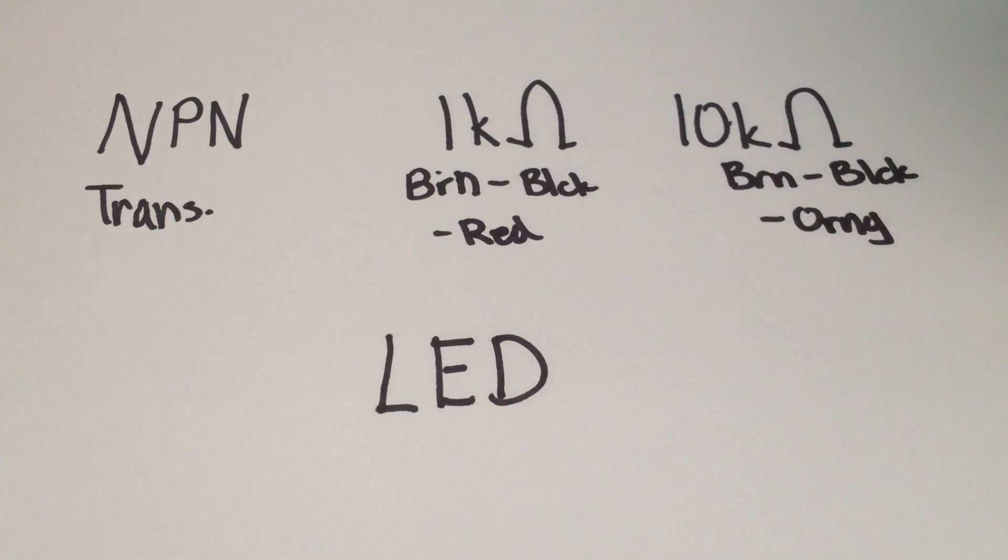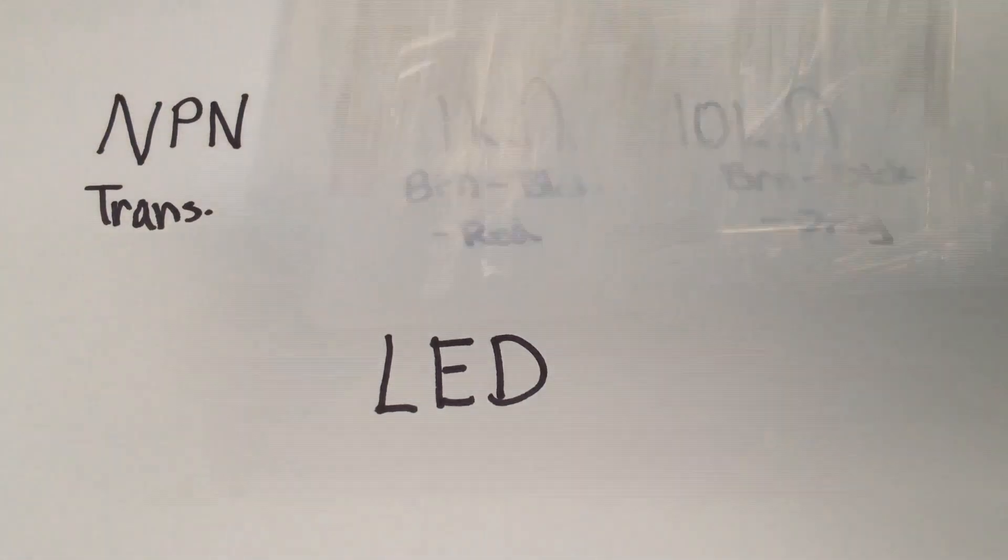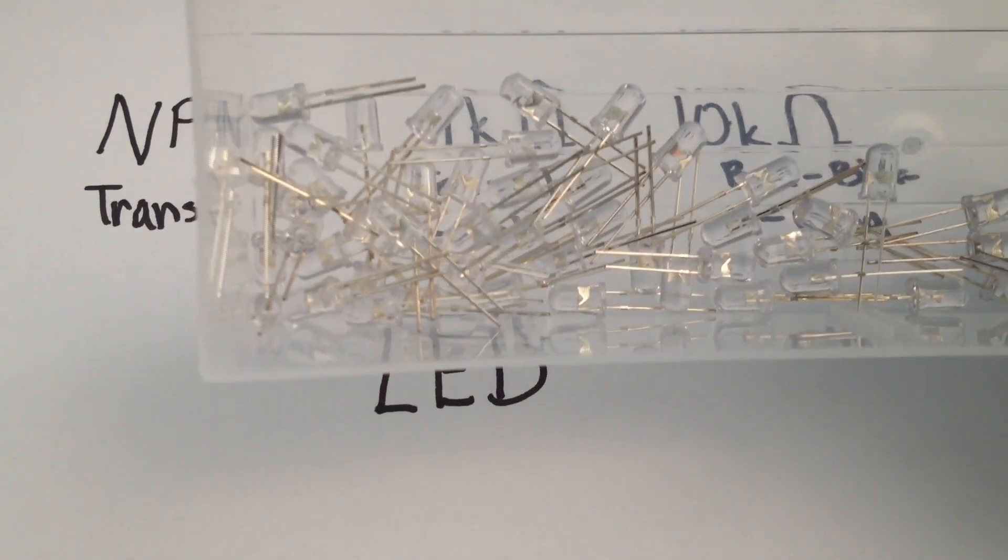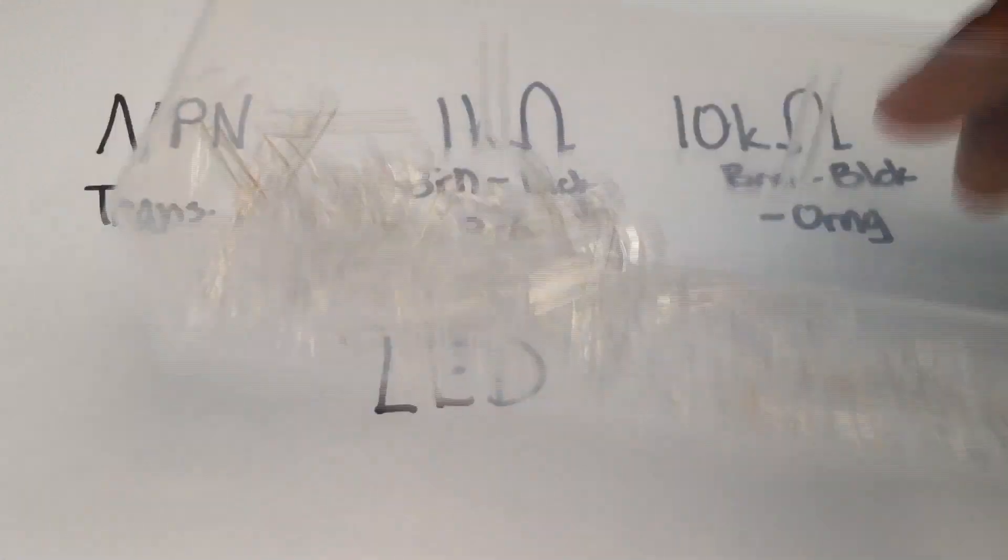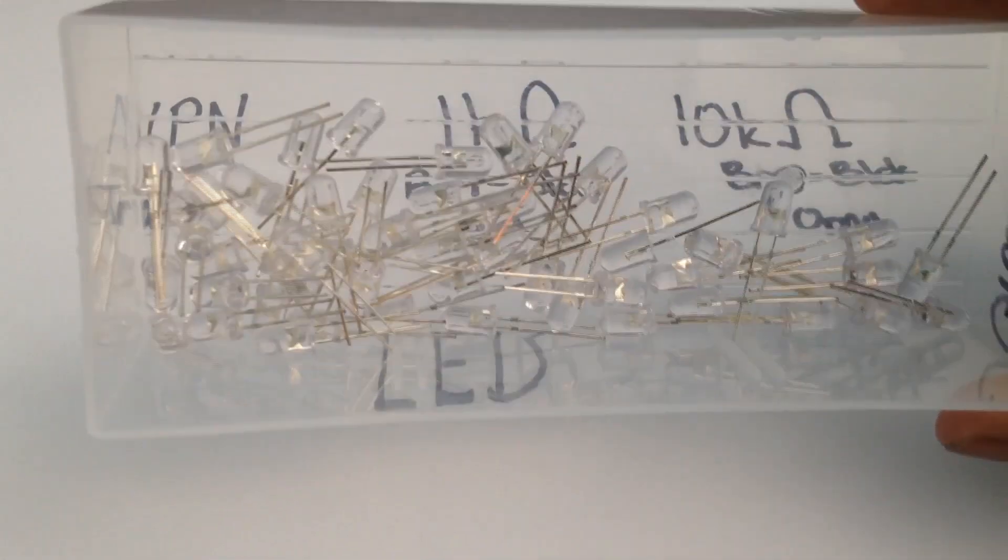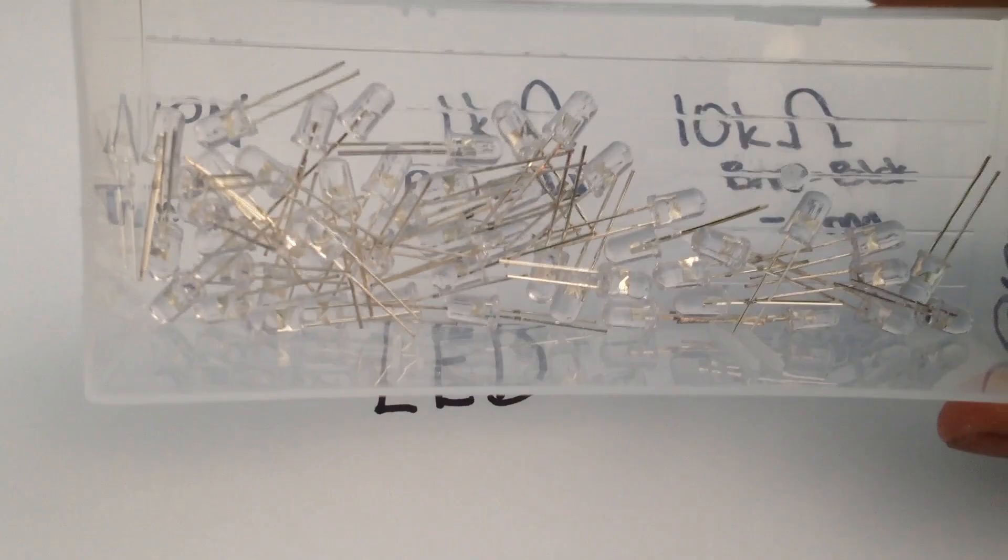Then you're going to need some 10K resistors, and the resistor code for that is brown, black, orange. Then you're going to need some green LEDs, because this is going to be your output, or you can just choose any LEDs. The ones I have here are green. And this is going to cost you also like 5 bucks for like 50.